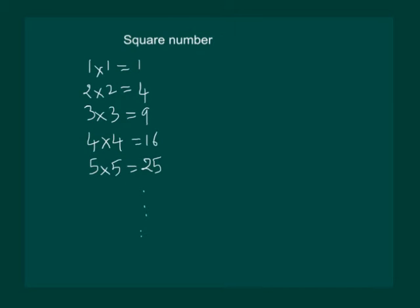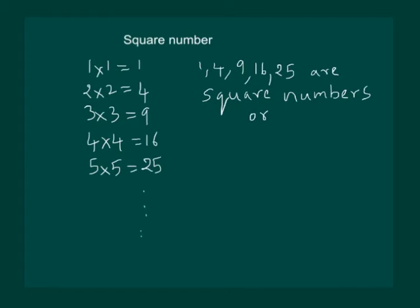Here we can see that 1, 4, 9, 16, 25 can be expressed as the product of a number with itself. That means 3 with 3, 4 with 4, 2 with 2 and 5 with 5. So we say that numbers like 1, 4, 9, 16, 25 are square numbers or they are also known as perfect squares.